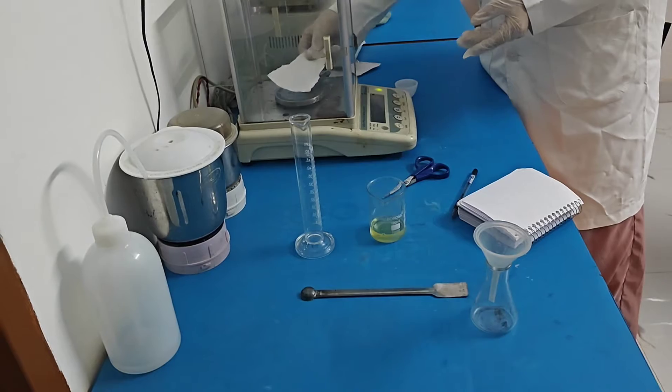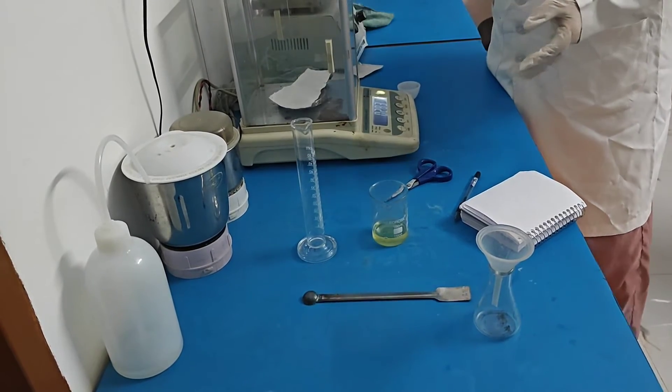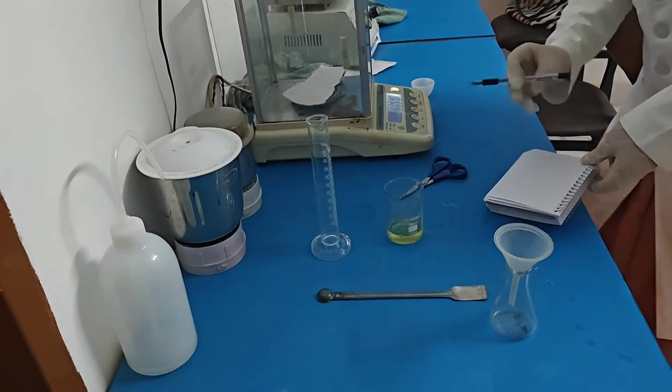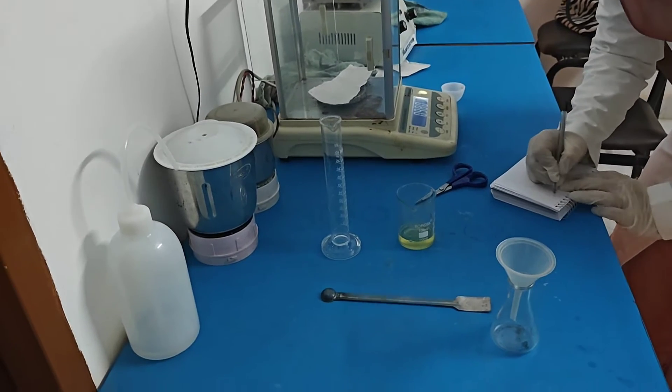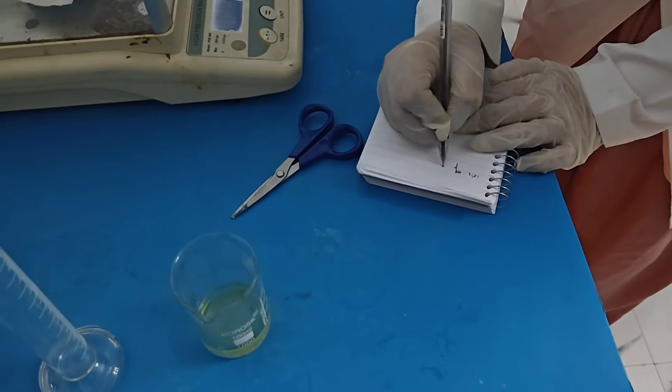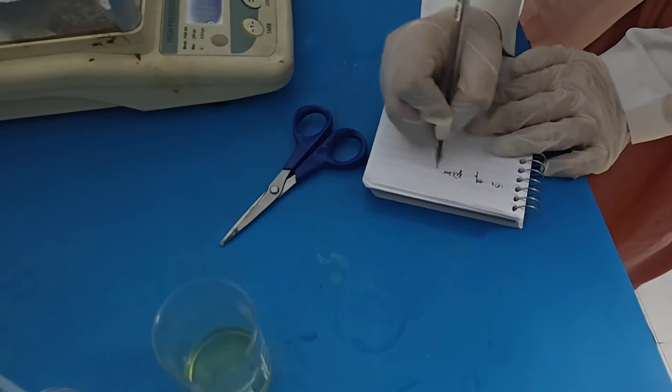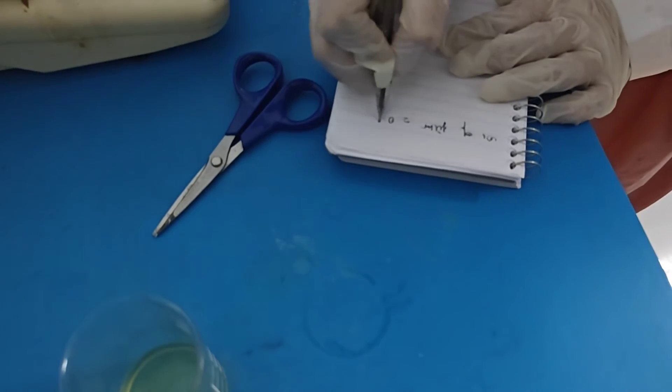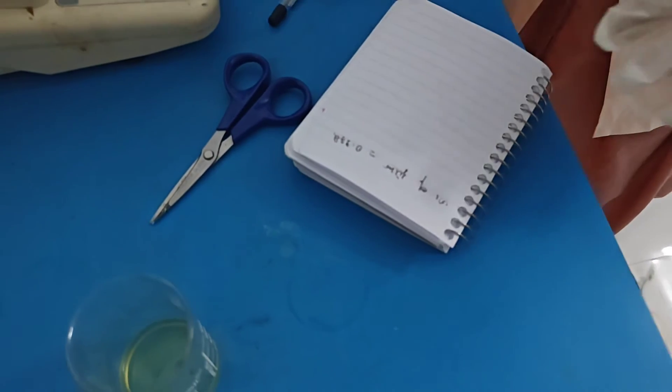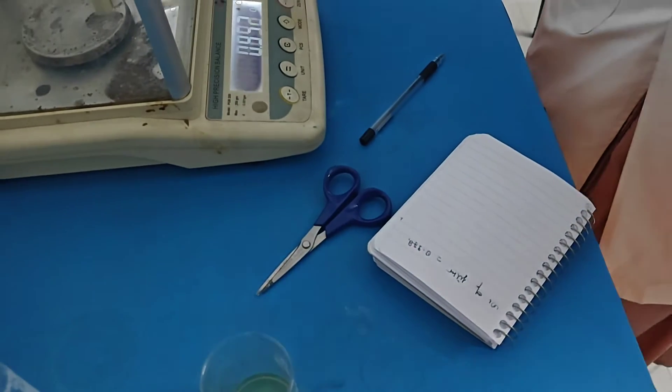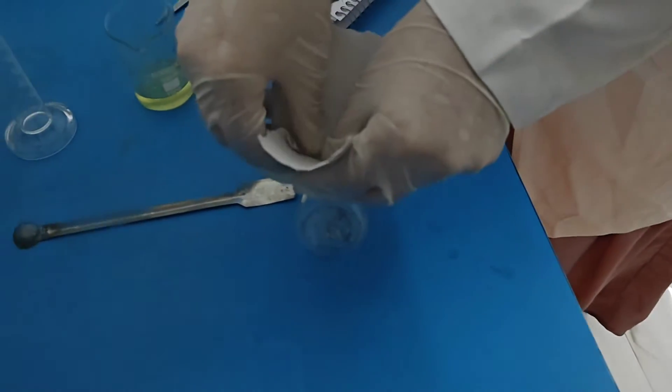So that in the end, I will minus the weight of the filter paper. Here the weight of the filter paper is 0.978 grams. Now I am going to filter the HCl solution.